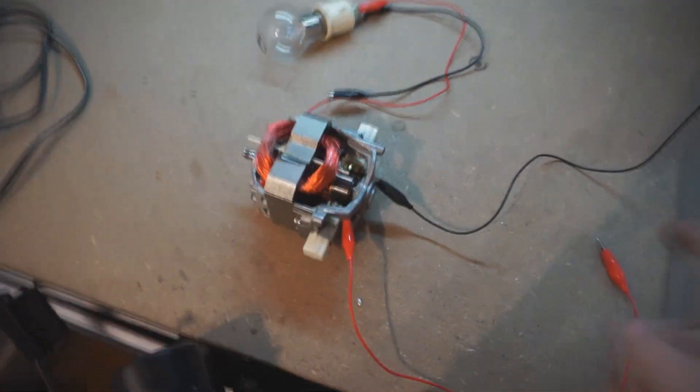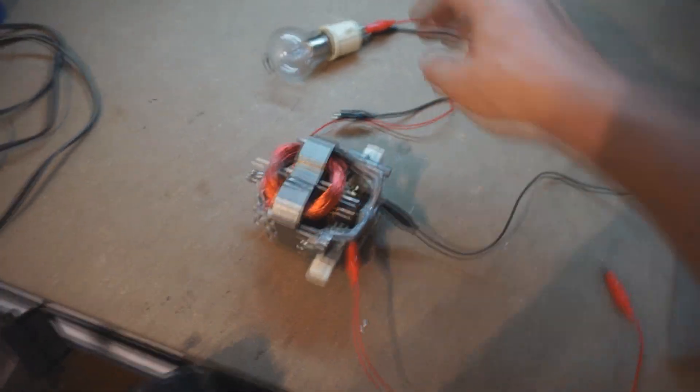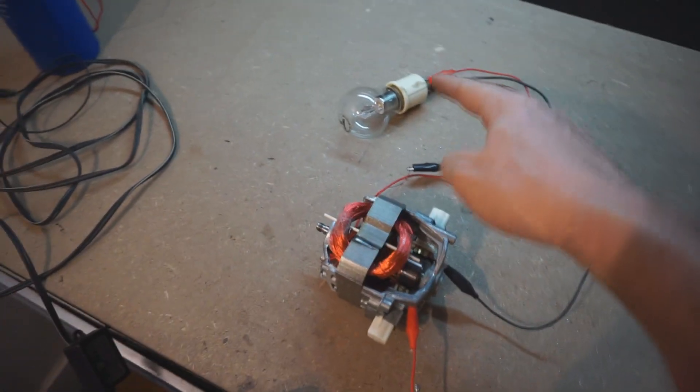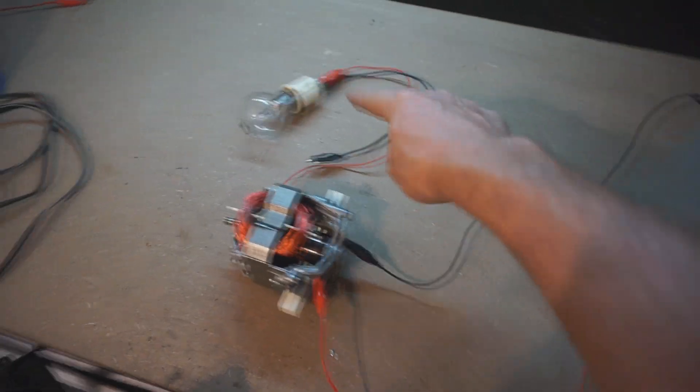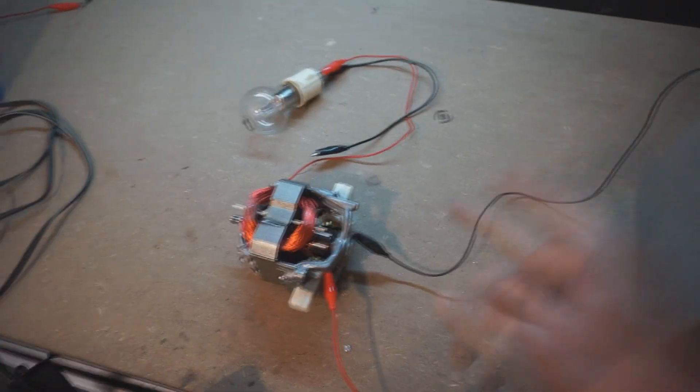The other thing that's fascinating to me is using one of these motors as an inverter type device. Over here I have an AC light bulb and I'm able to light this AC light bulb up off this 12 volt battery. Normally that light bulb would not light up off this 12 volt battery.